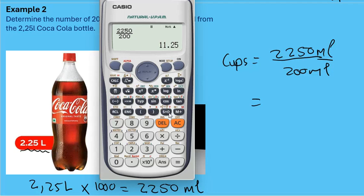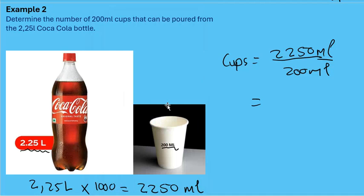The question is: do we round up or round down? When it comes to volume, we round down, because if you round up, that last cup won't be filled. So 11.25 rounds down to 11 cups. With volume, we always round down.